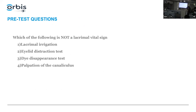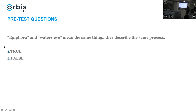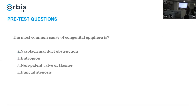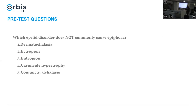Let's start with some pre-test questions. Which of the following is not an important part of the lacrimal exam? True or false: is watery eye the same as epiphora? What is the most common cause of congenital epiphora — nasal lacrimal duct obstruction, entropion, blocked valve of Hasner, or punctal stenosis? Which eyelid disorder does not commonly cause epiphora — ectropion, entropion, caruncal hypertrophy, or conjunctival chalasis?